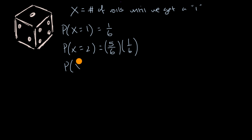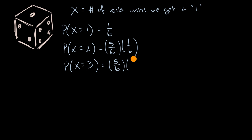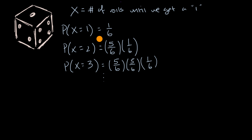What's the probability that X is equal to three? That means we miss on the first two, so we have a five-sixths chance each time — that's five-sixths times five-sixths, or five-sixths squared. And then on the third roll we have the one-in-six chance of getting the one, so times one-sixth. And I think you see a pattern here, and you might recognize what type of random variable this is.